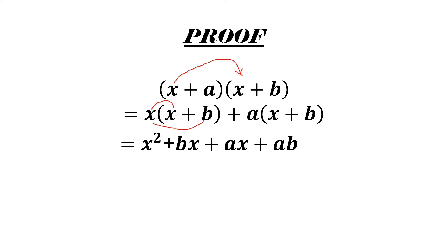Now plus a into the entire term x plus b. a into x gives ax, and a into b gives ab. So we get x square plus bx plus ax plus ab. Here bx and ax are like terms, so we go ahead and combine them.